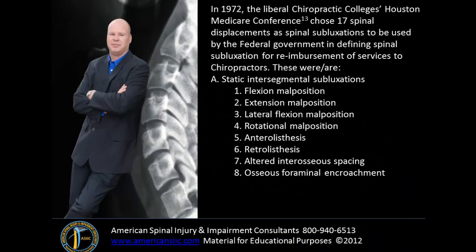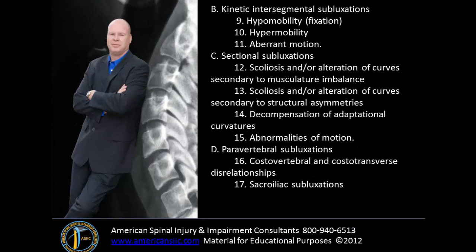Let's look at the misalignment patterns put forth in 1972 for the Medicare listings of the different types of spinal misalignments that can cause spinal subluxation under the scope of chiropractic care. These included static intersegmental subluxations — flexion malposition, extension malposition, lateral flexion malposition — as well as kinetic intersegmental subluxations, which include hypomobility (commonly understood as a fixation), hypermobilities, and aberrant motions. We also had sectional subluxations, alterations of curves, decompression of adaptational curves, abnormalities of motion, paravertebral subluxations, costovertebral, costotransverse, and sacroiliac subluxations.